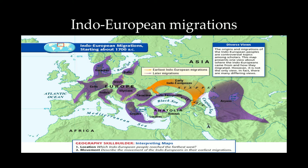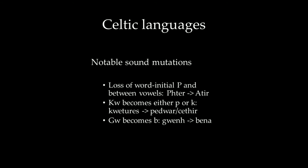The Celts were also one of the first peoples to use iron, which gave way to a second migration where they settled in what is today France, Spain, Portugal, and also the British Isles. Celtic languages evolved unique sound mutations from the original Indo-European language. This includes the loss of word-initial P and P between vowels. For example, the word for father in Indo-European was Pater and it became Atir in Gaulish.